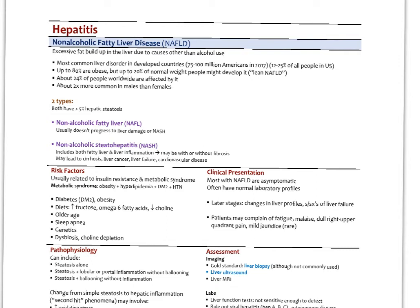More ominous is the non-alcoholic fatty liver disease or NAFLD. That's excessive fat buildup in the liver due to causes other than alcohol use. It's the most common liver disorder in developed countries. We're actually seeing it surpass the numbers on the alcoholic liver injury. We think there's between 75 and 100 million Americans in 2017. That's up to 25% of all the U.S. population have some degree of NAFLD.